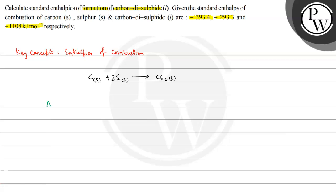The enthalpy of this reaction can be written as: ΔH° = ΔcH°(products) minus ΔcH°(reactants).